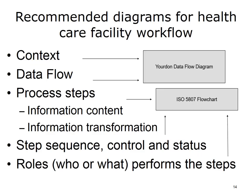Not all of the process aspects noted earlier are critical for the process improvement work covered here. For Healthcare Workflow Process Improvement, we recommend Yordan Data Flow Diagrams or ISO 5807 flowcharts, covering process steps, step sequence and other control, as well as roles performing the steps. Yordan Data Flow Diagrams and ISO 5807 flowcharts are covered in Unit 3. We recommend that you review these two sections carefully. The primary slides reviewed provide concepts and background, while Unit 3 provides more detailed instructions on how to create and use the diagrams.